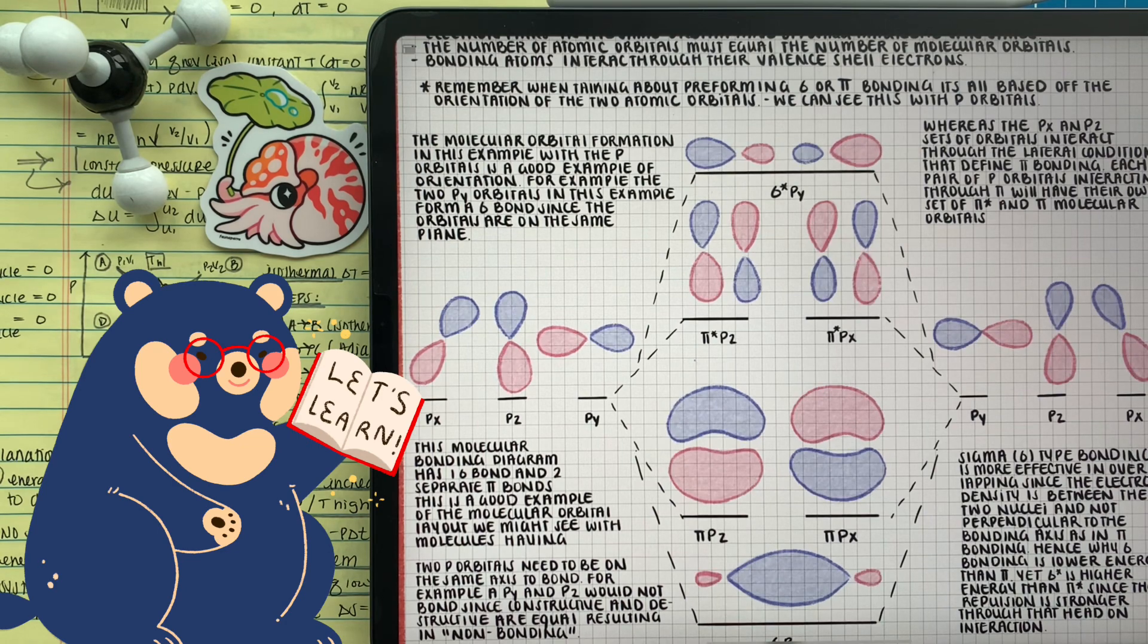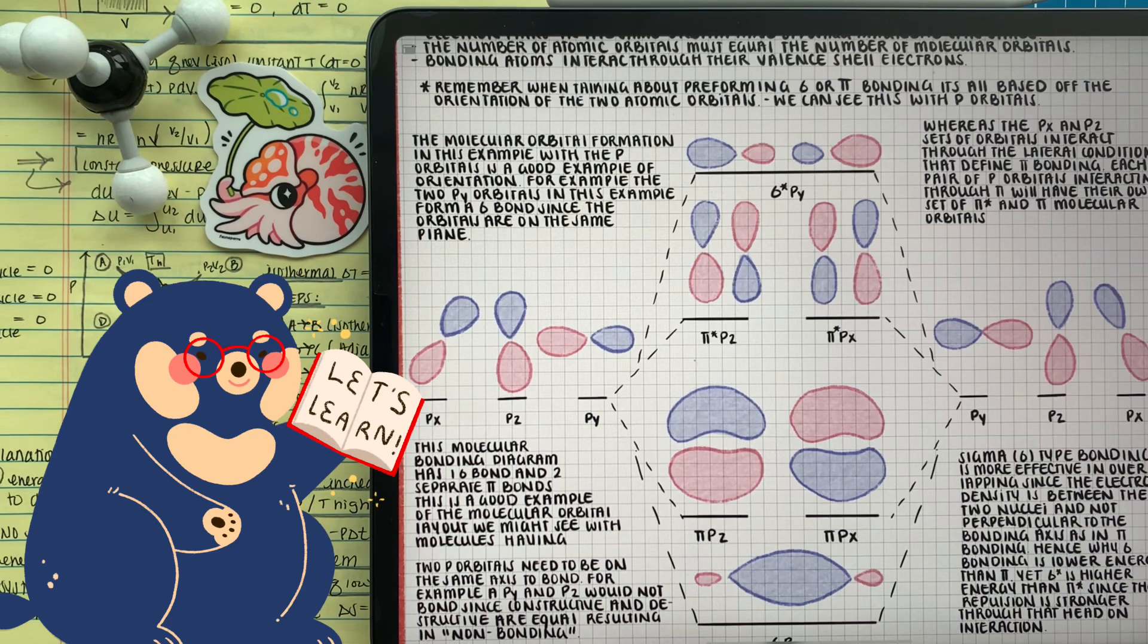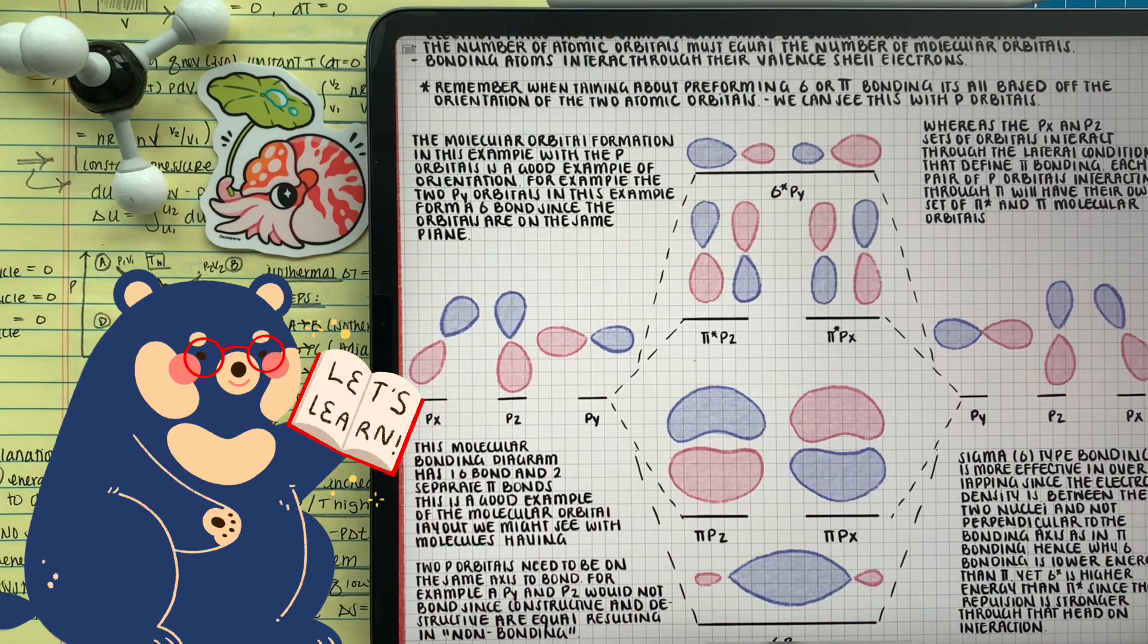And that's where you see the sigma bonding and the sigma anti-bonding. Whereas, the px and the pz orbitals from both sets will have lateral interactions in this case, forming the two sets of pi bonds. This is a suitable example of what we might see with a triple bond.